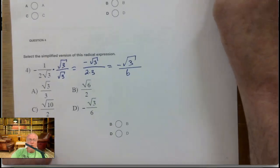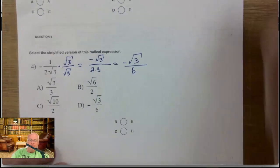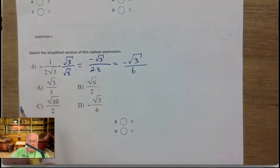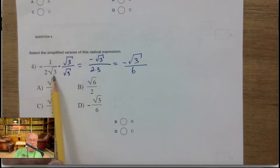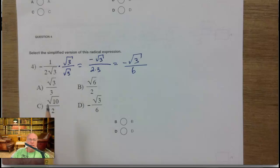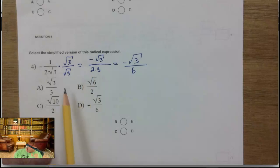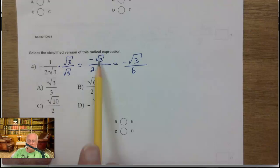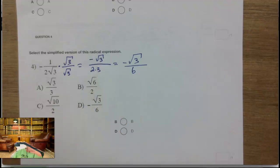Number four. There's a negative here, so your answer's going to be negative. There's a square root of three down here, so we've got to get rid of it. Multiply the top and the bottom by the square root of three. So the bottom just becomes 2 times 3 — that's 6. And the square root of three is on top. Remember, it's negative.